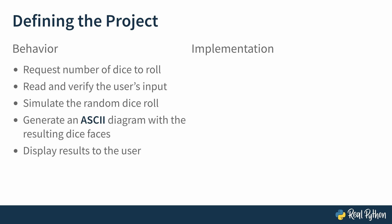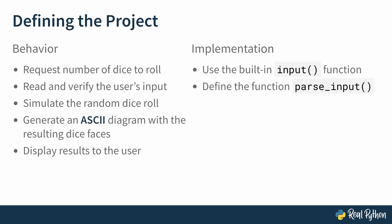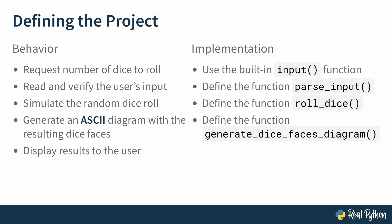How will you be implementing these behaviors? For the request, you'll use the built-in input function with the appropriate arguments. For validation, you'll define a function called parseInput, whose internal logic will include string methods, comparison operators, and conditional statements. To simulate random rolls, you'll define a function called rollDice, which depends largely on Python's built-in random module. Generating the ASCII results will be handled by a function named generateDiceFacesDiagram, where you'll use for loops and string manipulation methods to create ASCII art. And finally, you'll display those results using the built-in print function.